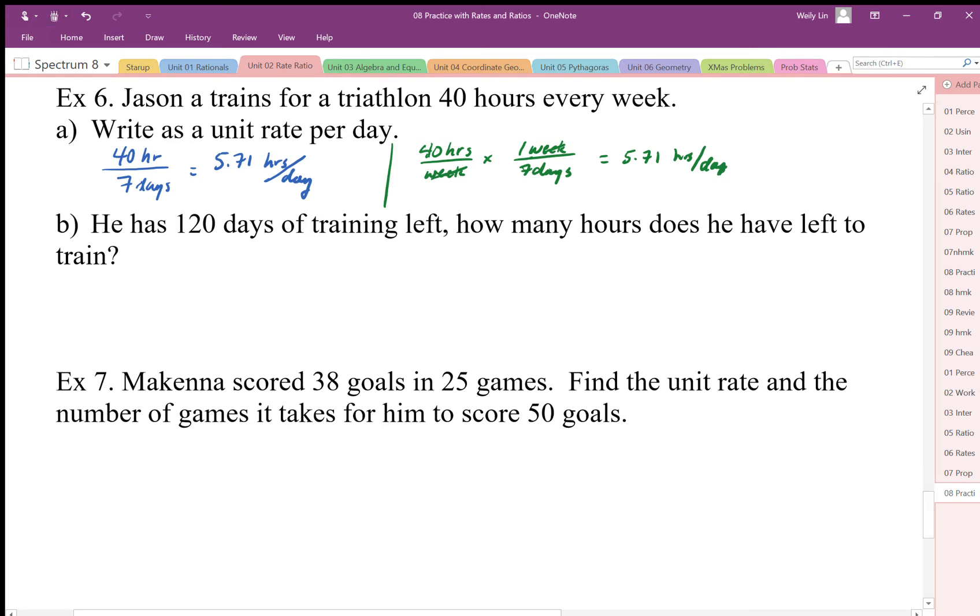Jason here has 120 days of training left. How many hours is he going to train? Well, I know that he's got 5.71 hours every day and he's got 120 days, so I'm just going to multiply those together. I can see that my units are going to cancel out. This is divide by days times by days, and when I multiply 120 by 5.71, I get about 685.7, so 685.7 hours of training still. I can see that my units are perfectly matching.